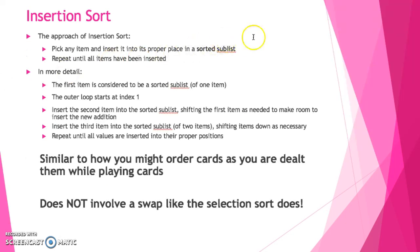Insertion sort is a little bit different from selection sort. Insertion sort does not have a swap. Instead, it has more of a slide. The way that insertion sort works is it's going to pick an item and it's going to insert it into the proper place in a sorted sublist. And it's going to repeat this process until all of the items in the array have been inserted where they belong.